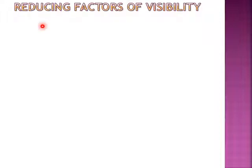Vision is the ability of the eye to sense and respond to the incident light beam. Under certain conditions, the light falling on the eye reduces visibility. Brightness and contrast are the two factors that control visibility. If they are affected, the visibility is also reduced.